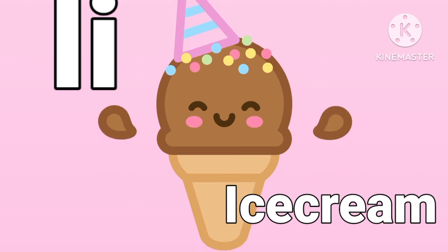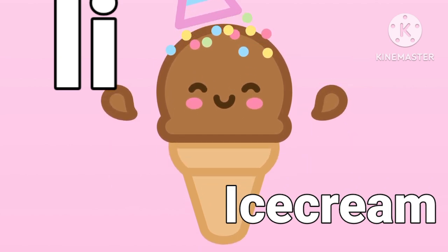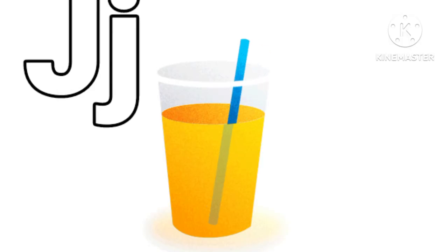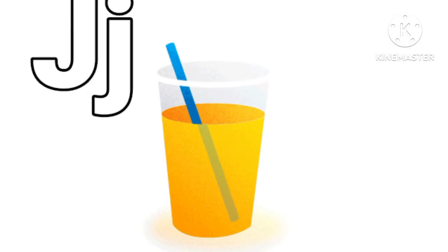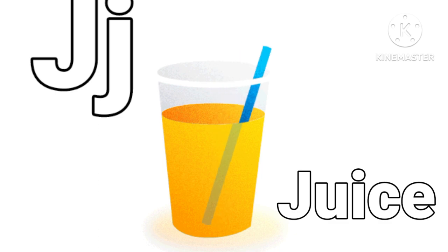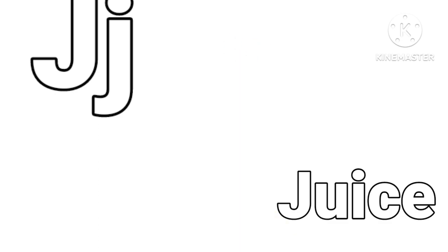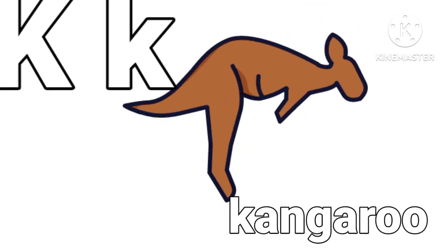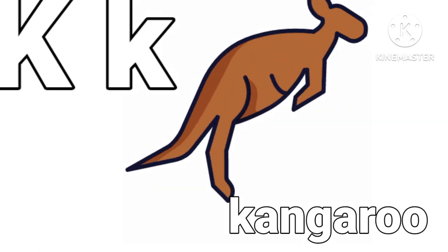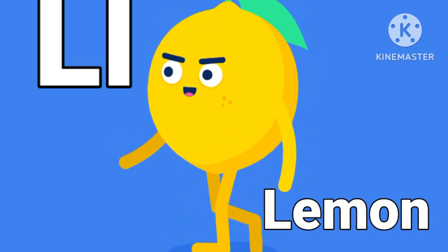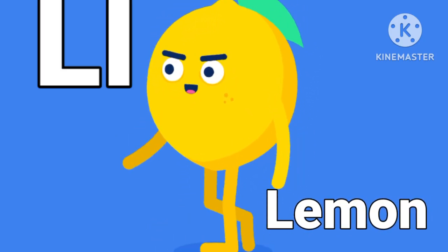I for ice cream. J for juice. K for kangaru. L for lemon.